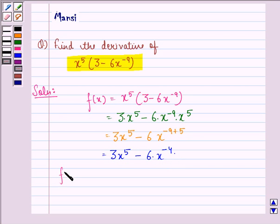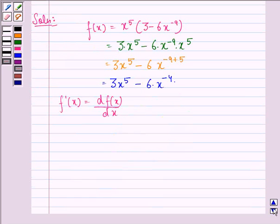Now we can find out f'(x), that is the same as derivative of f(x) with respect to x. So derivative of f(x) will be derivative of first term minus derivative of second term. Now derivative of first term will be 3 into 5 into x raised to power 5 minus 1, minus 6 into minus 4 into x raised to power minus 4 minus 1.